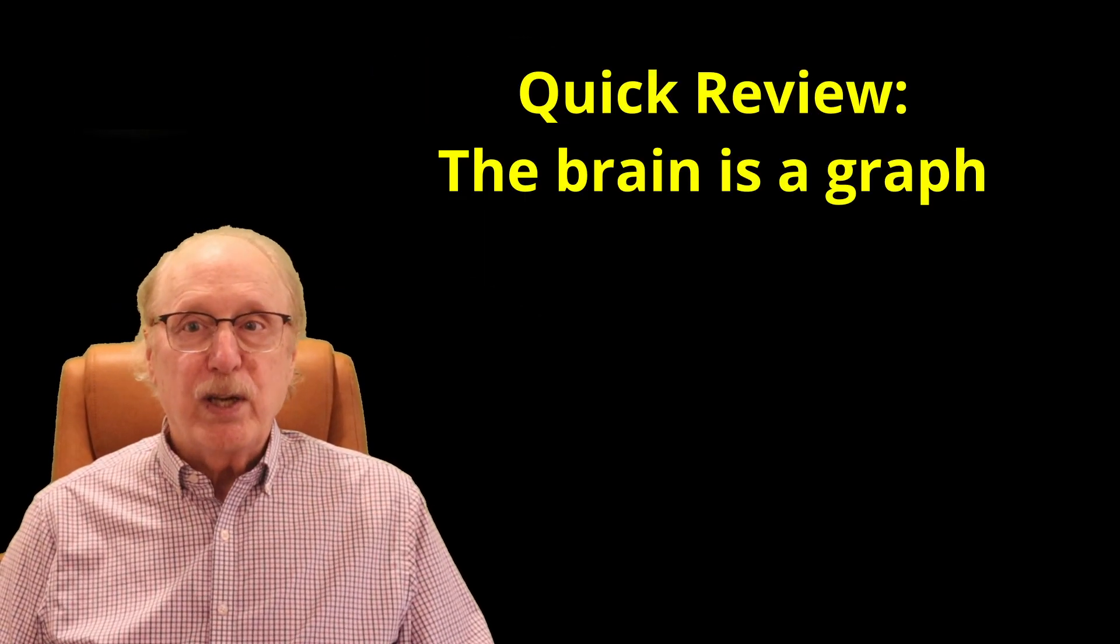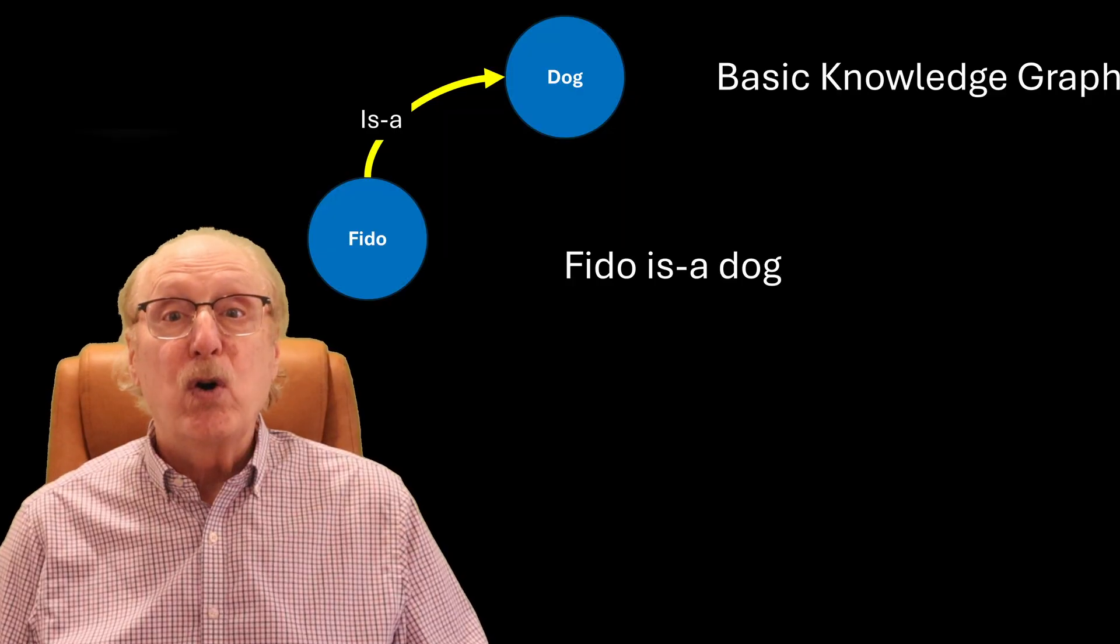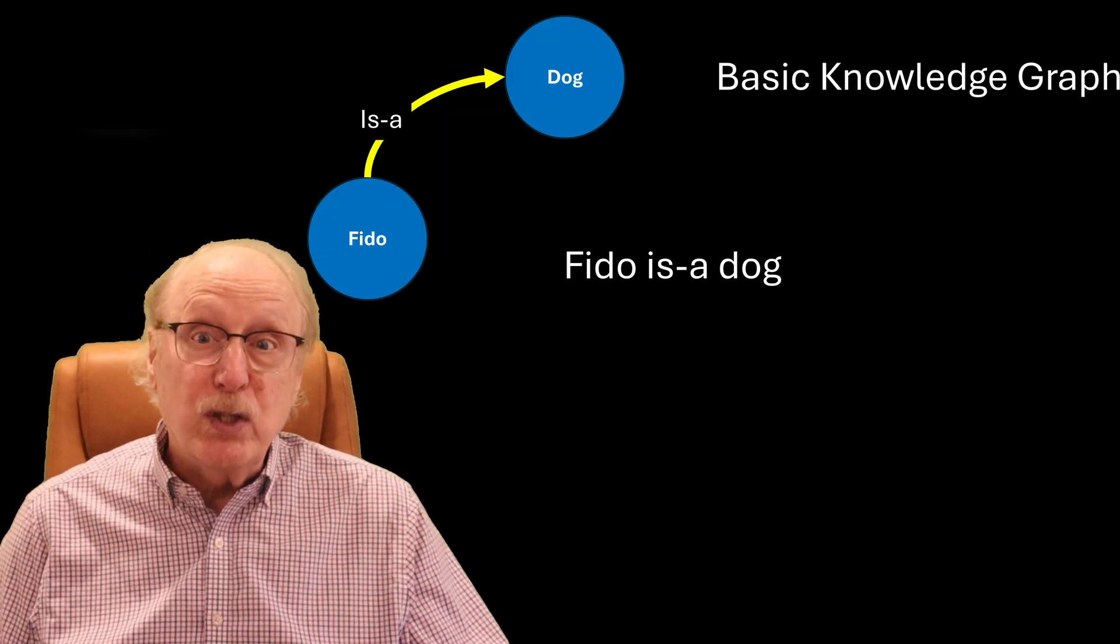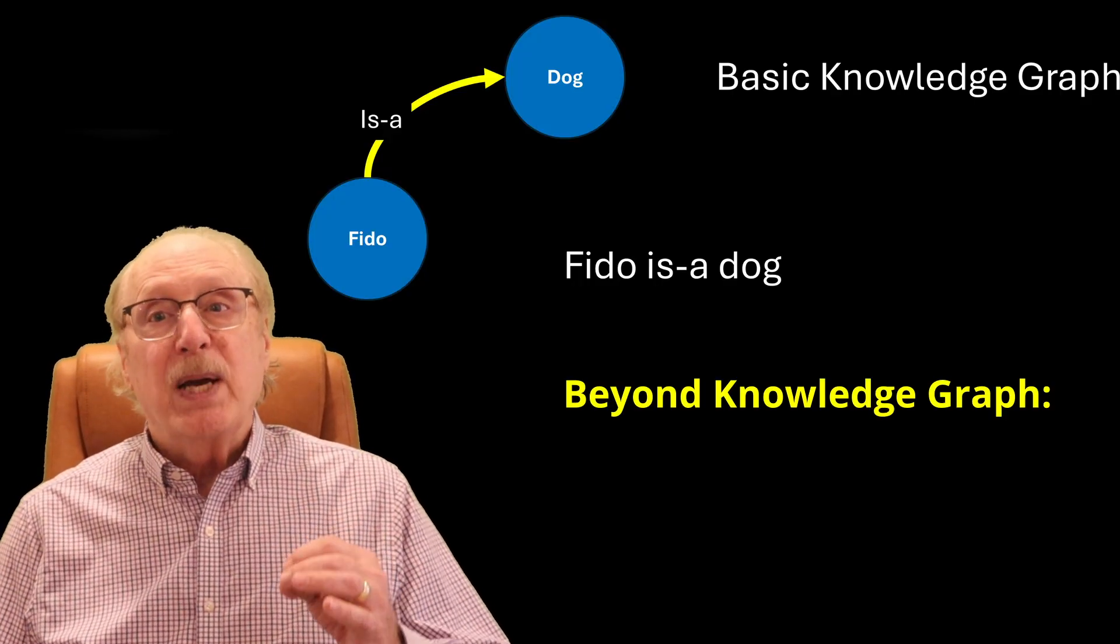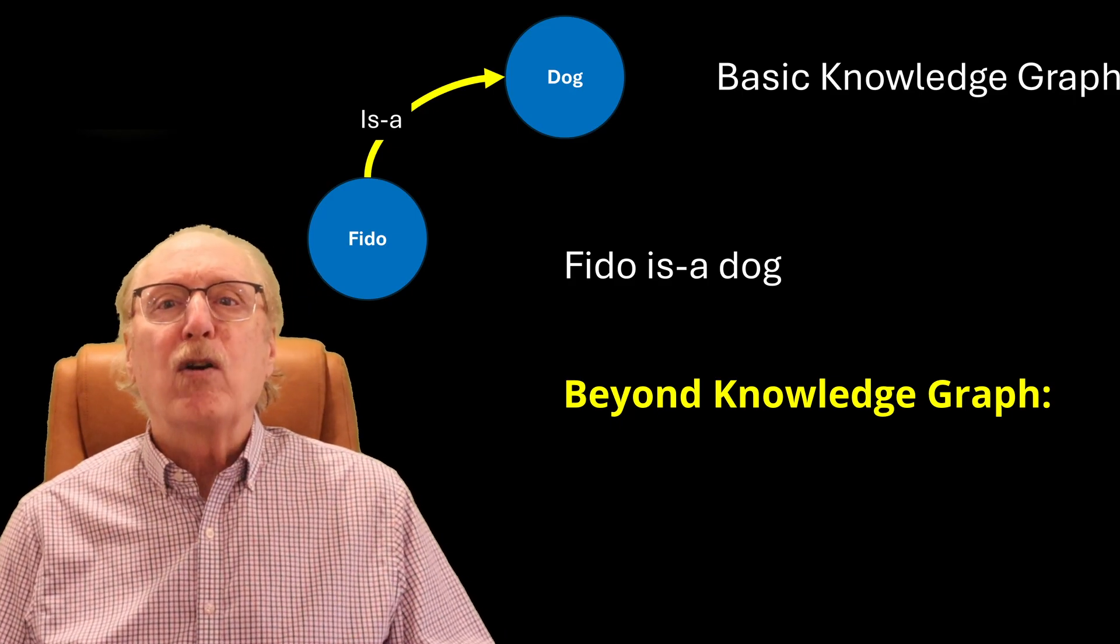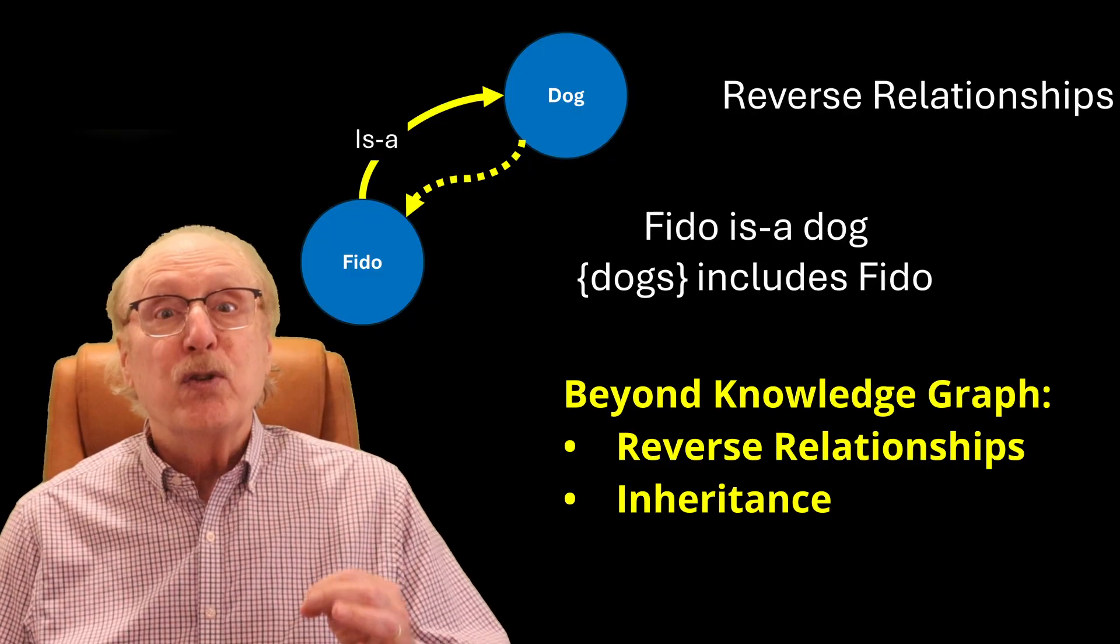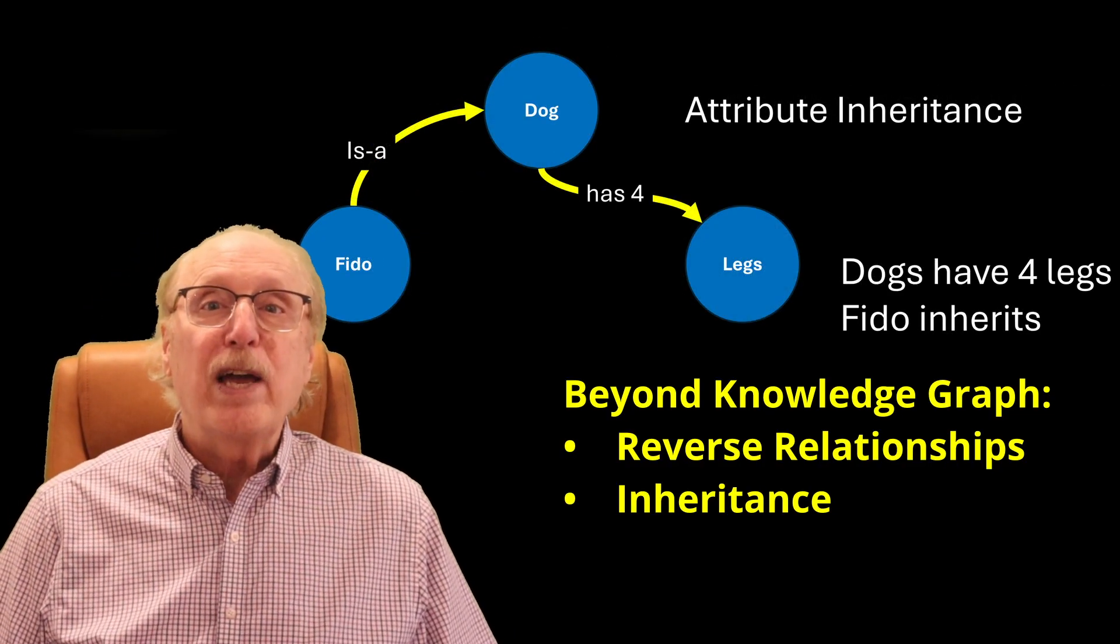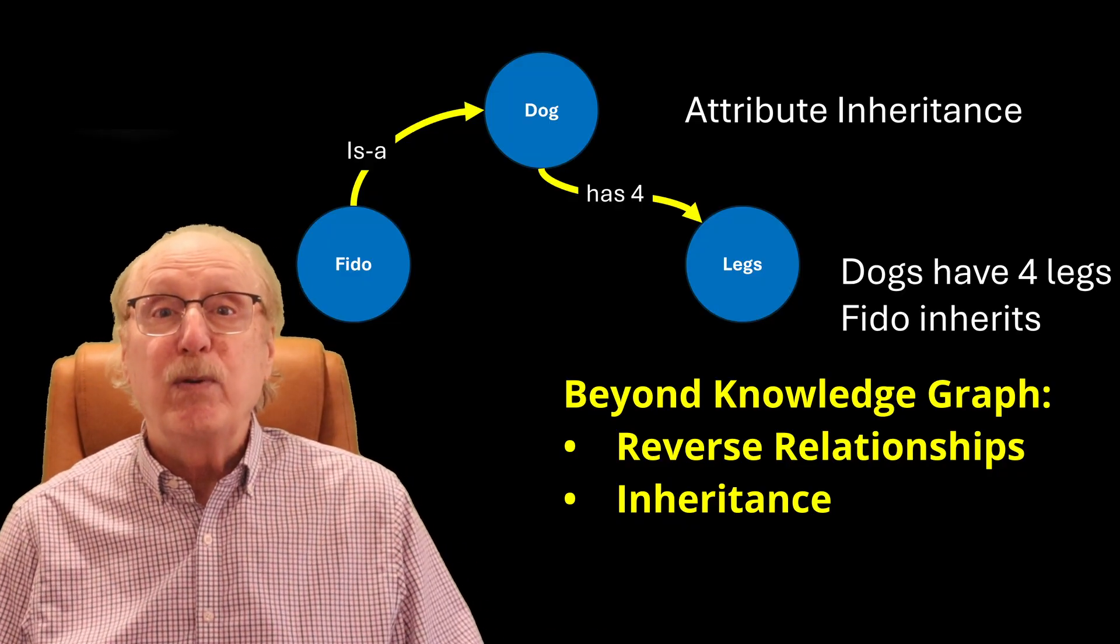In many of my videos, I've explained how the brain's information is organized as a graph of nodes connected by edges, so that the fact FIDO is a dog would be represented by two nodes and a single edge. By simply observing how our minds work, we quickly conclude that our brain's graph also supports reverse relationships and inheritance, so that when we learn that dogs have four legs, we also know that FIDO has four legs because he inherits that attribute from dog.